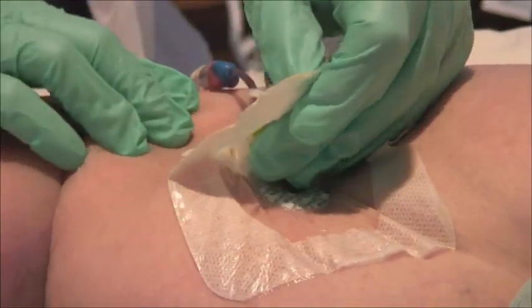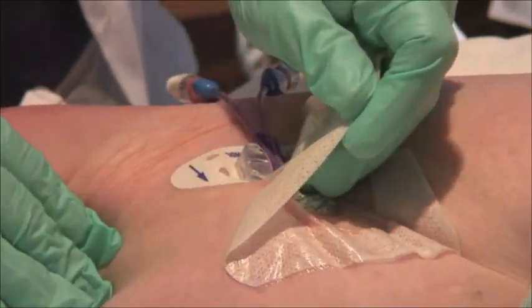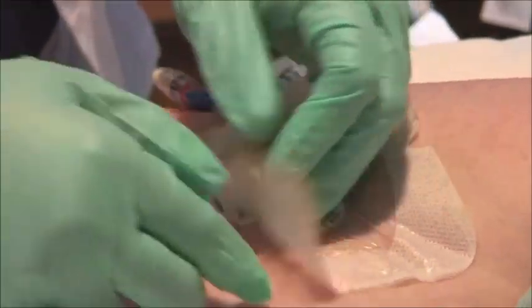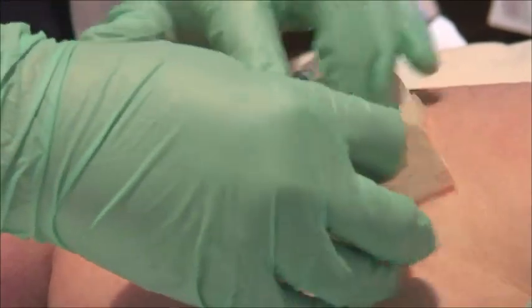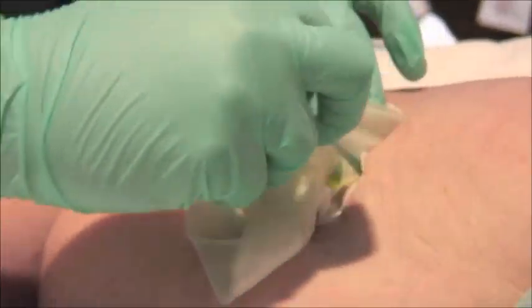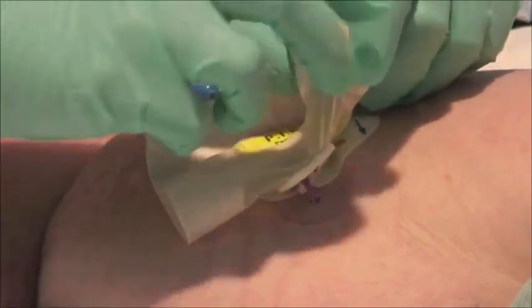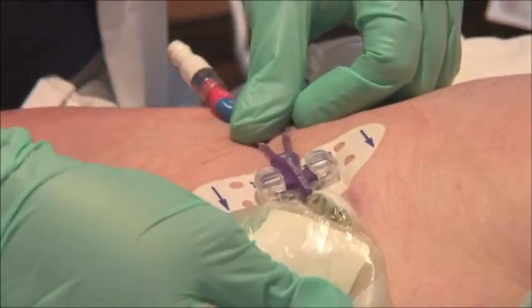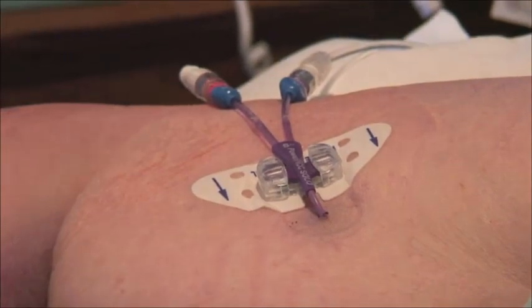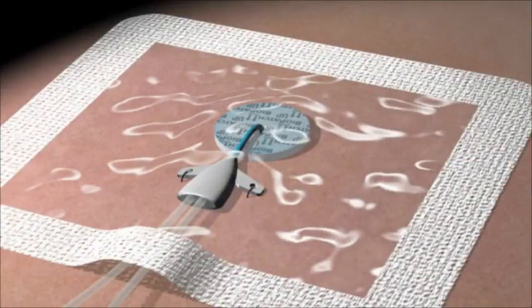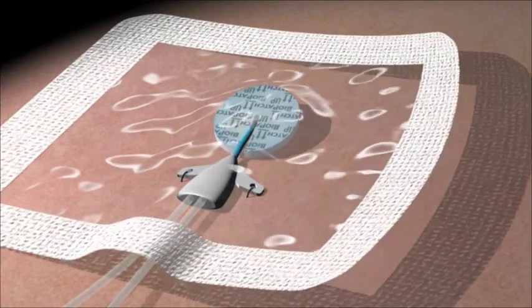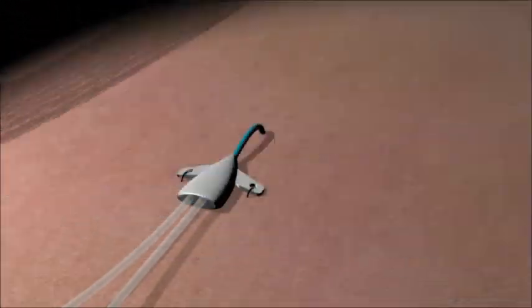When changing BioPatch, first remove the transparent dressing by picking up the corner of the dressing and stretching the dressing away from the catheter. Holding the catheter in place, the dressing will partially peel back until resistance is felt. Repeatedly stretch and peel as necessary until the dressing is removed. BioPatch will remain attached to the transparent film dressing, so removal will be simultaneous.